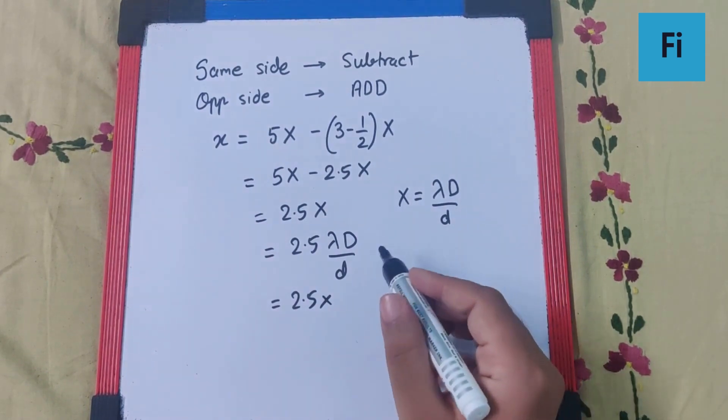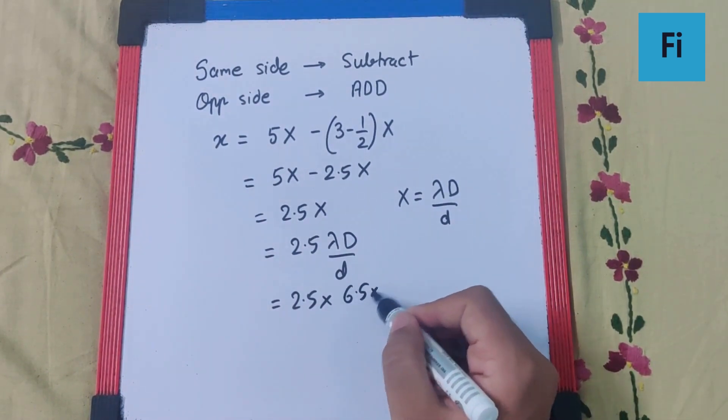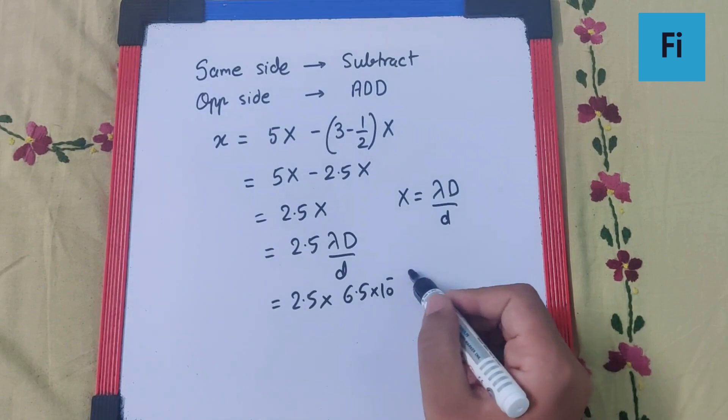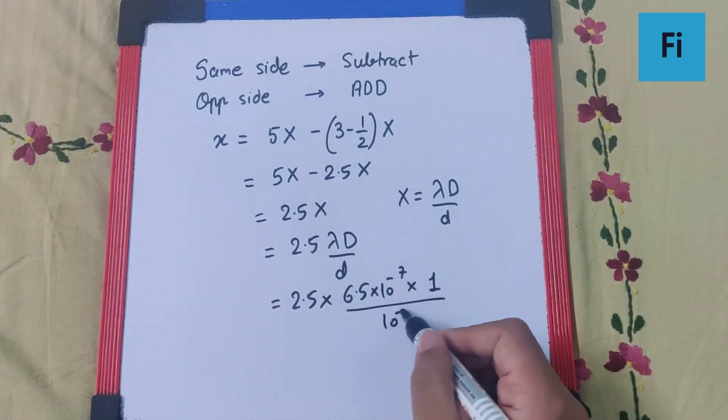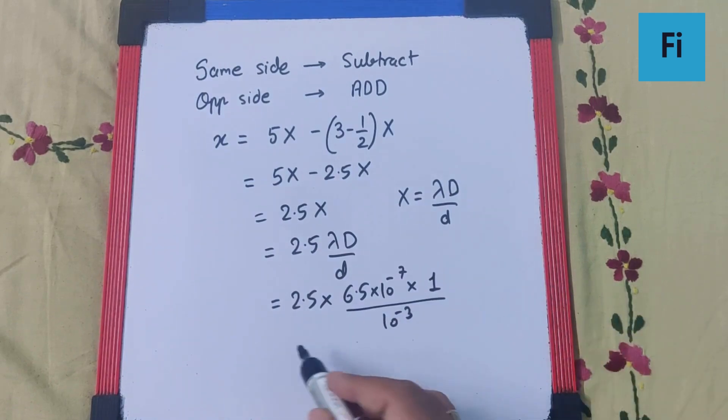lambda is 6.5 × 10^-7, capital D is 1 meter, and small d is 1 millimeter, which is 10^-3. Now we